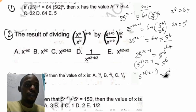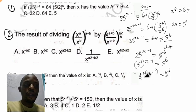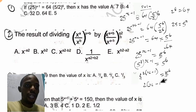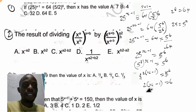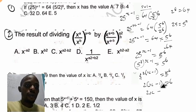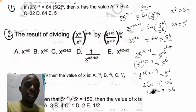This becomes 5 raised to the power of 2 times open bracket s minus 1, close bracket, equals 5 raised to the power of 6. Since both sides have the same base of 5, the 5s cancel. We are left with 2 open bracket s minus 1 close bracket equals 6. Opening the bracket: 2s minus 2 equals 6.